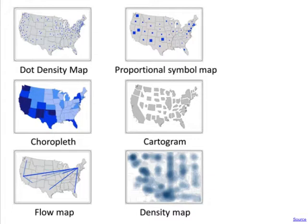A cartogram actually sizes areas based on a value — instead of leaving the area as its geographic size, you shrink or enlarge it based on a particular value. It's essentially like a choropleth but using relative size rather than colour to indicate the magnitude of the value. A density map — often called a heat map — is like a dot density map but instead of showing individual points, it shows a blurry aggregated view.